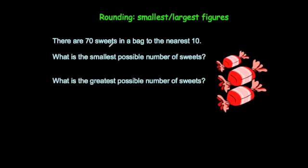So there are 70 sweets in a bag to the nearest 10. What is the smallest possible number of sweets?